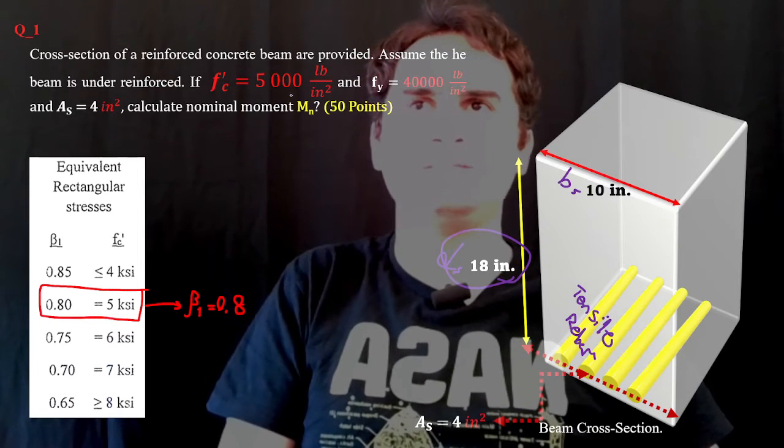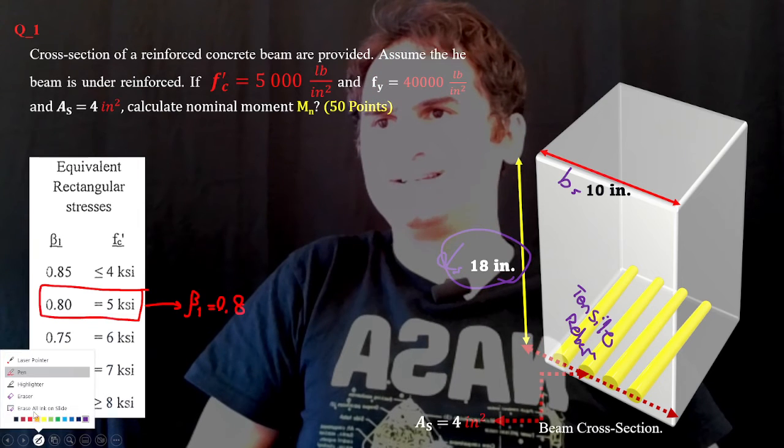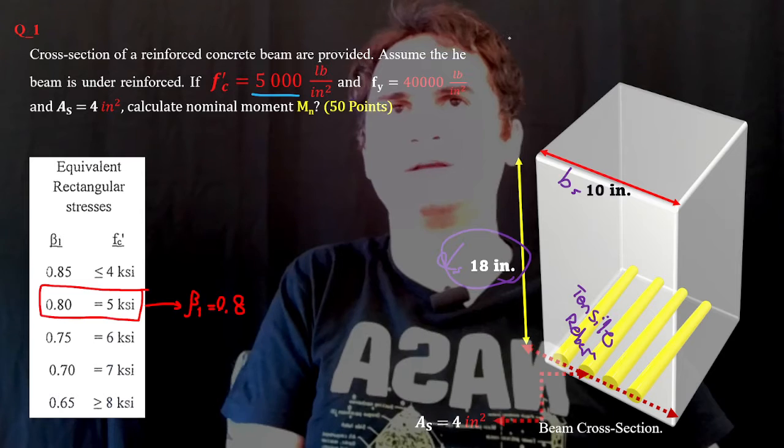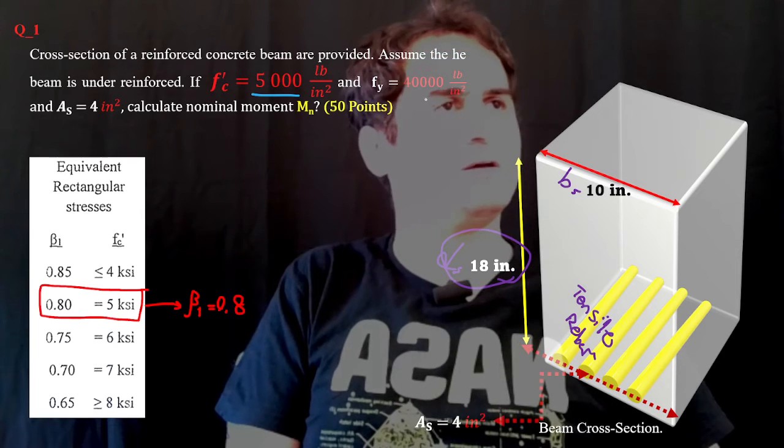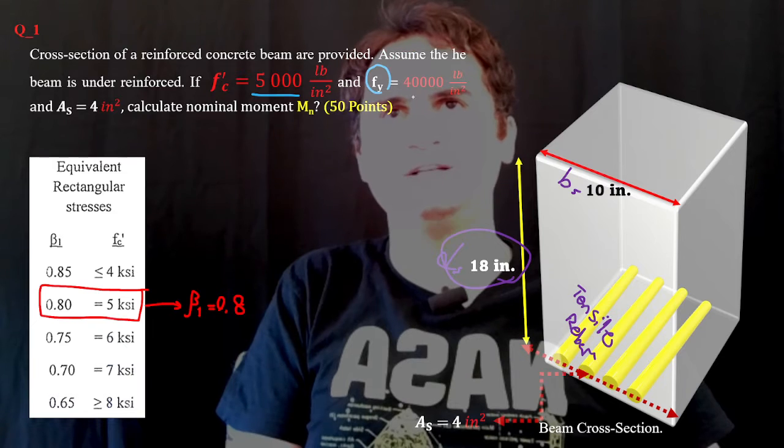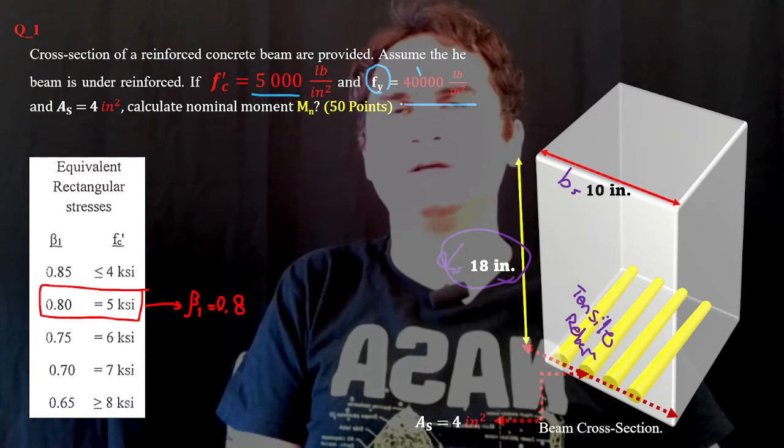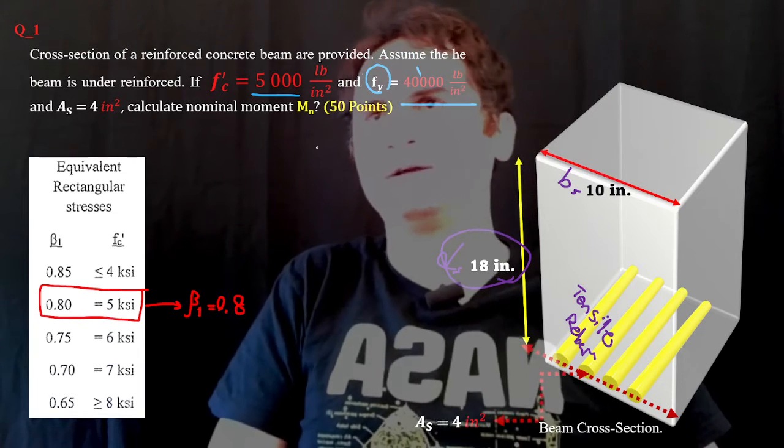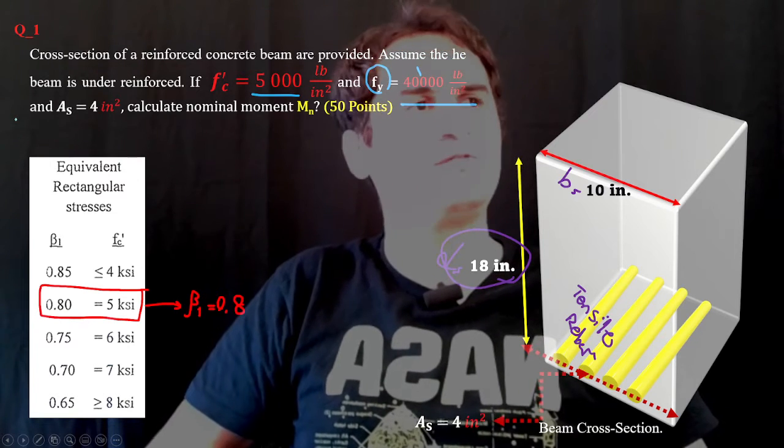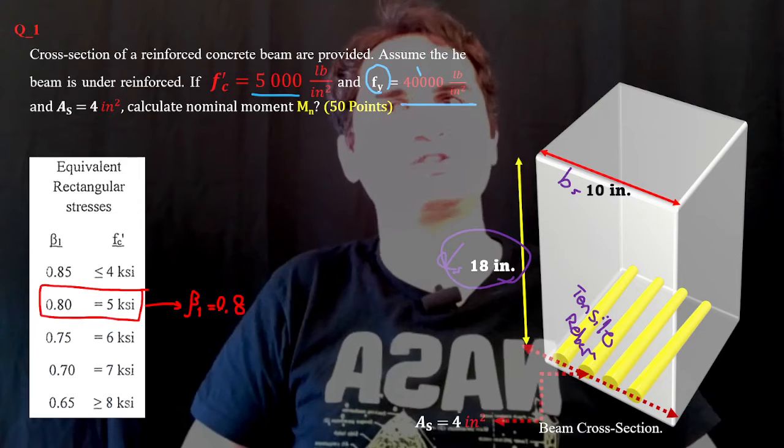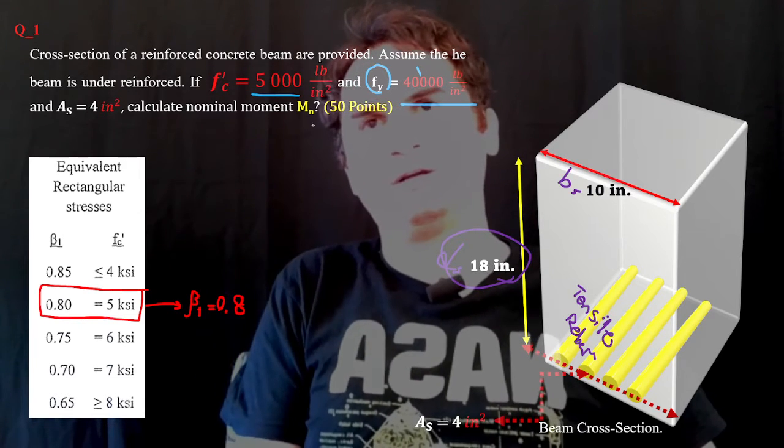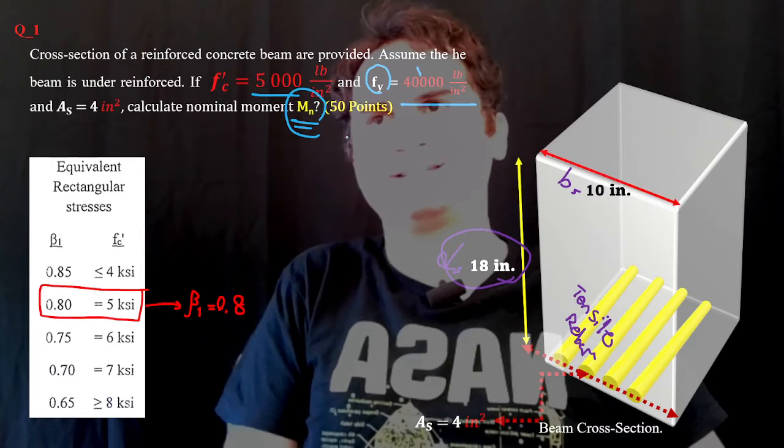If f'_c, the compressive strength of concrete, is 5,000 pounds per square inch and f_y, the yield strength of steel, is 40,000 pounds per square inch, and the area of tensile rebar A_s is 4 square inches, we want to know what is the nominal moment capacity.